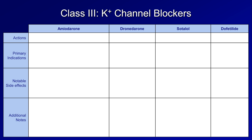Starting with its actions, although amiodarone is classified as a class III antiarrhythmic, it actually has properties of all four classes.